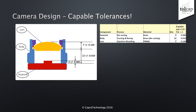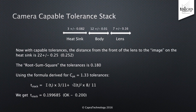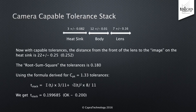So now we have CPK equals 1.33 capable tolerances: the heatsink ±0.082, the body ±0.01, and the lens ±0.160. With capable tolerances, the distance from the front of the lens to the image on the heatsink is 22 plus or minus 0.252 exactly. The root-sum-square of the tolerances is 0.180. Using the formula derived for CPK equals 1.33 tolerances — T-stack equals 3.11 of the sum of the tolerances plus 8.11 of the root-sum-square of the tolerances — T-stack comes to 0.2.